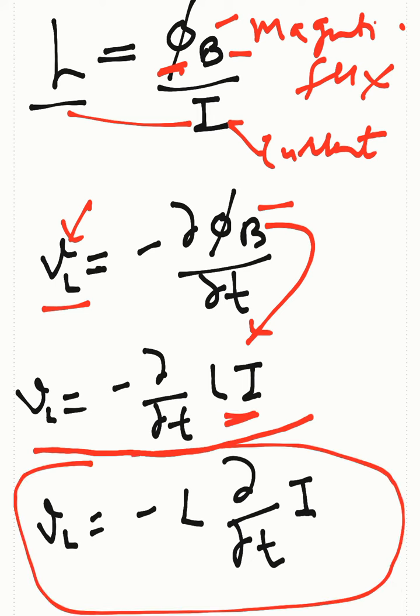equation, we arrive at the final form: the voltage across the inductor equals negative L times the rate of change of current, which produces this induced EMF.